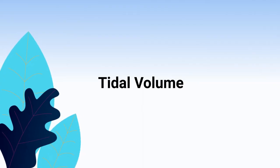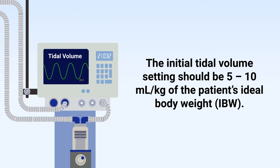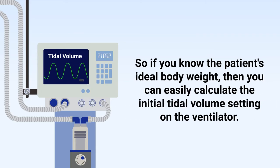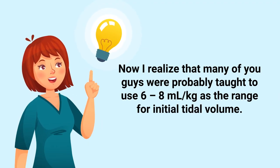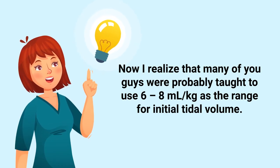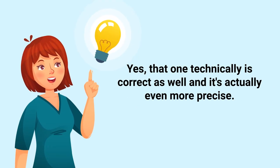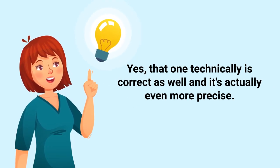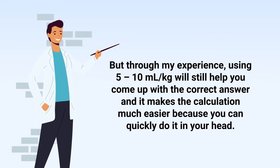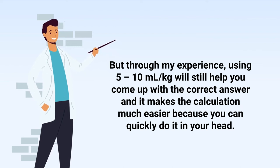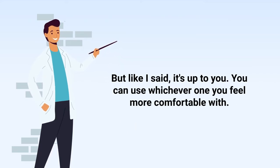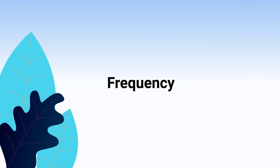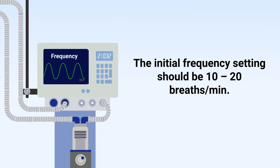Then you will need to input the initial tidal volume. The initial tidal volume setting should be 5 to 10 milliliters per kilogram of the patient's ideal body weight. Many are taught to use 6 to 8 milliliters per kilogram, which is technically more precise, but 5 to 10 mL/kg makes the calculation easier to do quickly. Use whichever range you feel more comfortable with. Then you need to input the frequency — the initial frequency setting should be 10 to 20 breaths per minute.